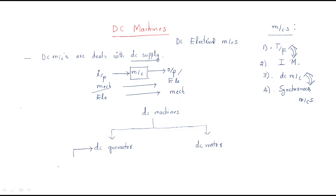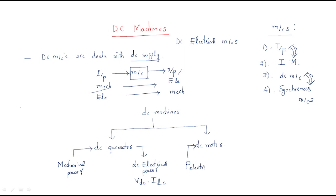The DC generator generates DC electrical power — that is, DC voltage and DC current. It takes mechanical power as input and generates electrical power. The DC motor is the reverse: it takes electrical input, specifically DC voltage and DC current, and generates mechanical power as output.